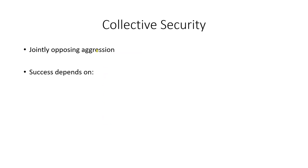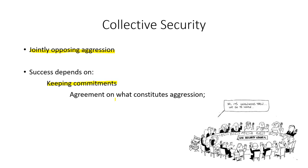Collective security is another form of cooperation from the institutionalist perspective. Unlike an alliance based on self-interest, collective security involves states coming together to jointly oppose aggression. The success of collective security depends on states keeping their commitments. States do tend to honor their agreements, primarily to maintain their legitimacy and credibility as trustworthy actors in the global system. When states back out, they lose credibility with others. Another challenge is agreeing on what constitutes aggression, which can be very difficult when diverse players are involved.